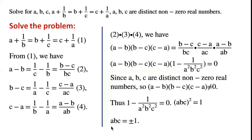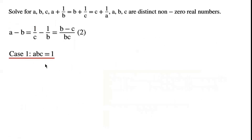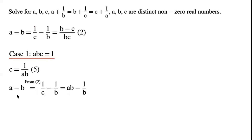Case one: ABC equals 1. By rearranging the equation, we have C equals 1 over AB. From equation 2, A minus B equals 1 over C minus 1 over B.